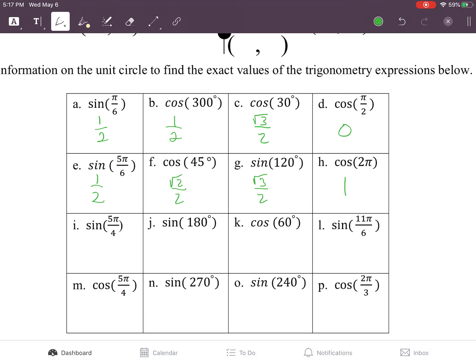5π over 4, the y value is negative root 2 over 2. At 180, the y value is 0. At 60, the x value is 1 half. At 11π over 6, the y value is negative 1 half.